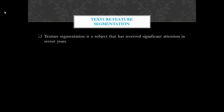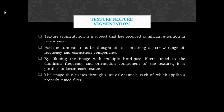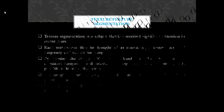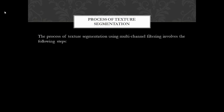Moving forward, let's talk about texture feature segmentation in particular. Texture segmentation is a subject that has received widespread attention in recent years. Each texture can be thought of as containing a narrow range of frequency and orientation components. By filtering the image using multiple bandpass filters, each tuned to the dominant frequency and orientation component of the textures, we can possibly locate each texture individually. The image, when passed through a set of channels where each channel applies a properly tuned filter, allows us to study the filter outputs and determine the region occupied by each texture individually. Thus, we get an image which is segmented using texture features as a particular parameter. The entire process of texture segmentation using multi-channel filtering involves the following steps.